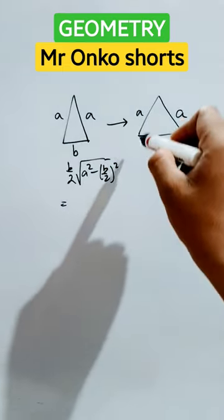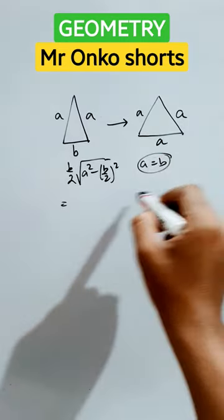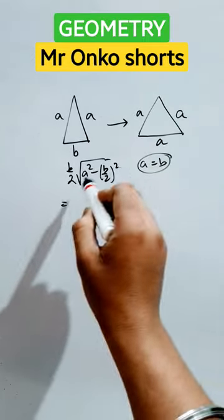Now, in case of equilateral triangle, the sides are equal. So here it is a equals to b. So, put b equals to a.